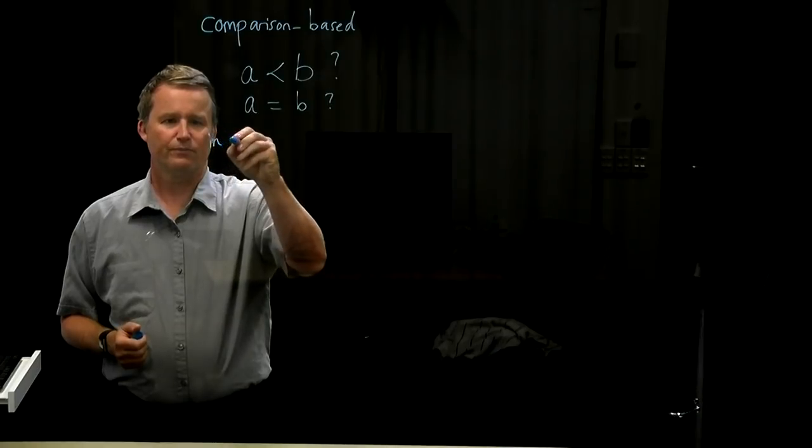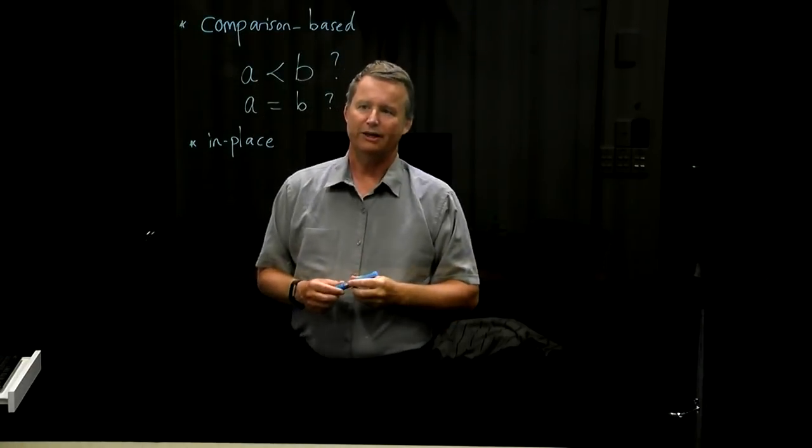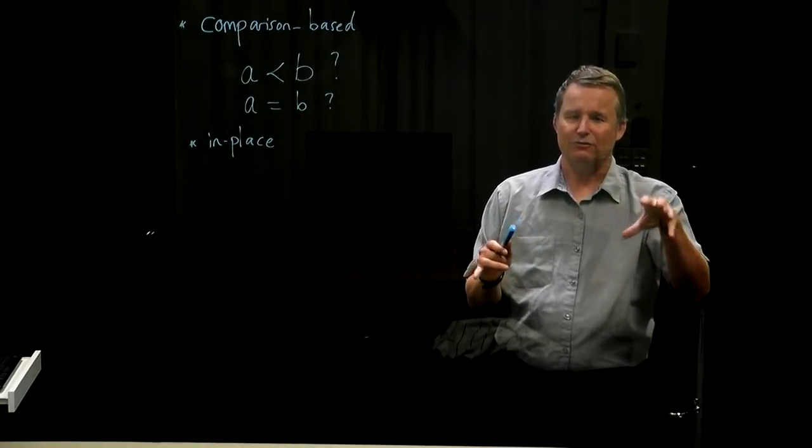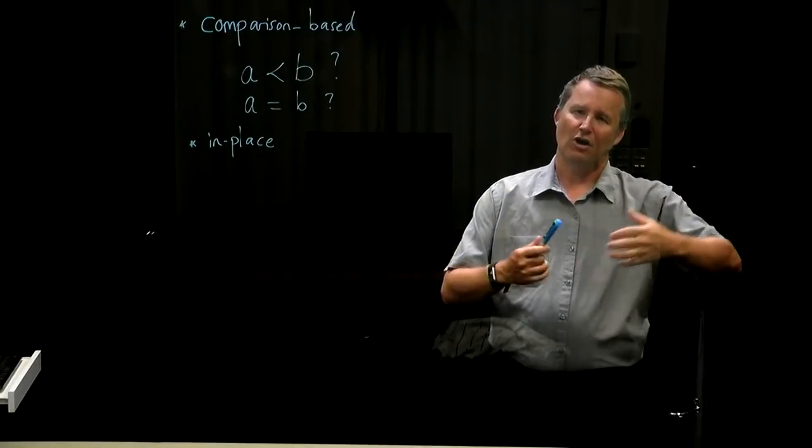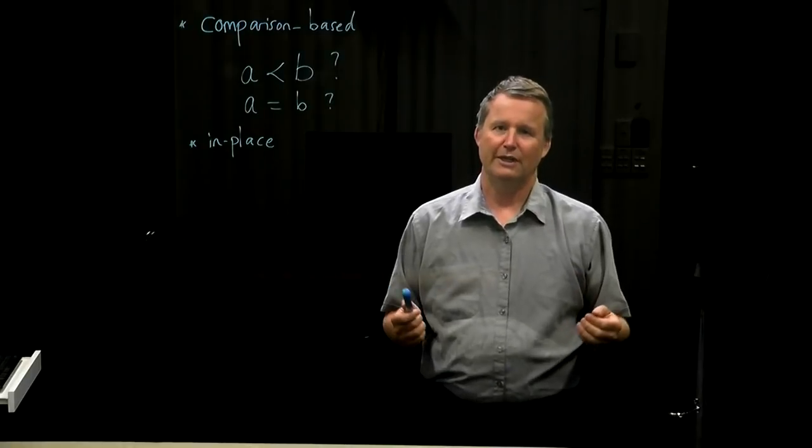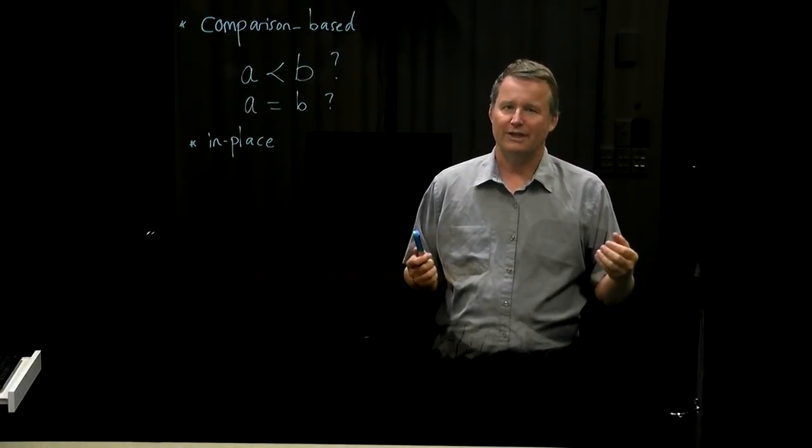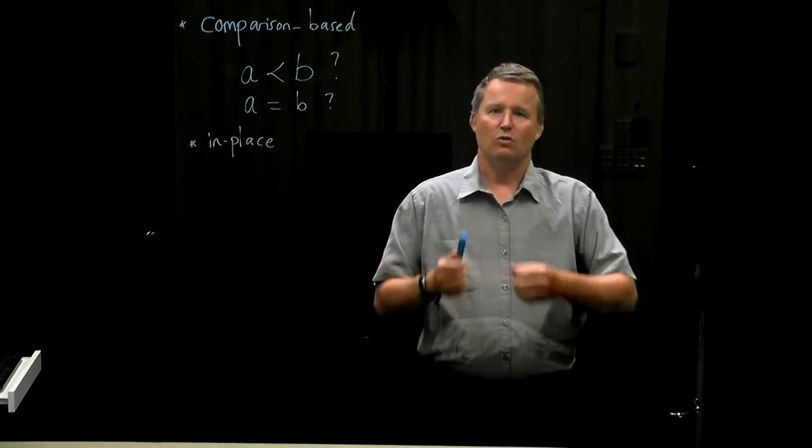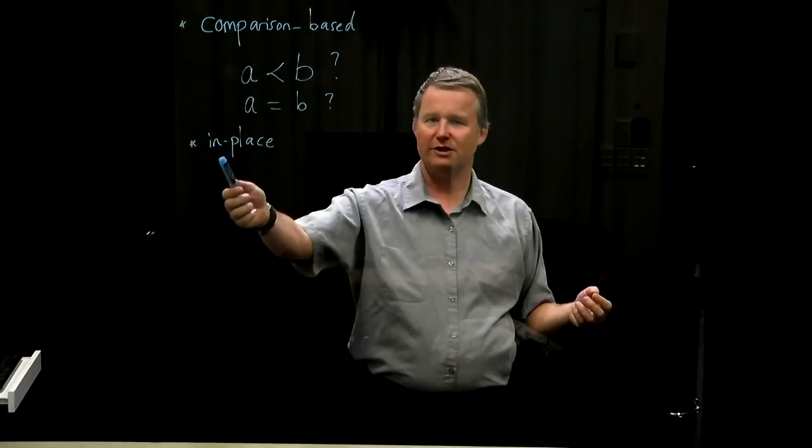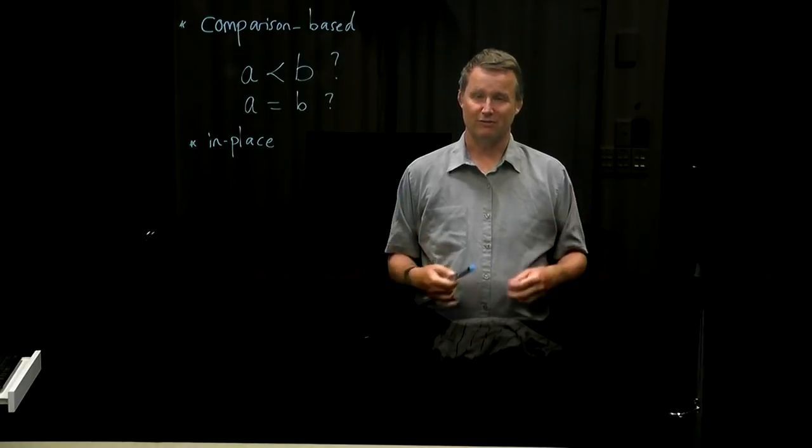For a comparison-based sorting algorithm, it's a general-purpose algorithm that can work for any data type as long as it has this basic comparison operation. We're going to focus only on those from now on. The next property is called being in-place. An in-place sorting algorithm may use a little bit of extra working space, but it's a bounded fixed amount of space independent of the input size. For example, it needs some room to do swaps. You need an extra bit of space to do a swap. But the key thing is you don't need an amount of space proportional to the size of the input.